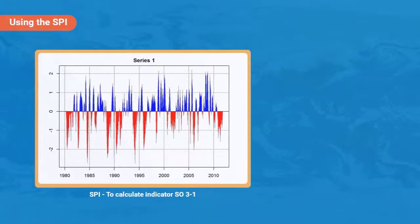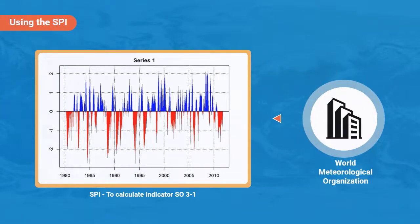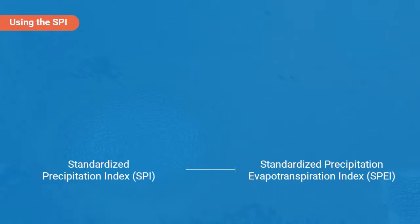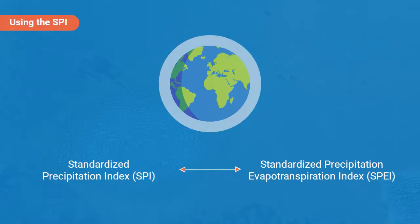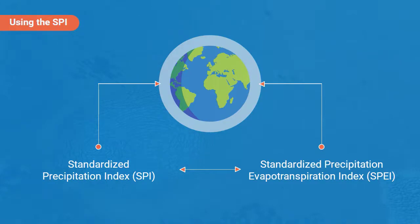The SPI is recommended as the basis for calculating indicator SO3.1, given its endorsement by the World Meteorological Organisation to monitor meteorological drought in the Lincoln Declaration on Drought Indexes. However, parties may use other indices already in use at national level, such as the Standardised Precipitation Evapotranspiration Index (SPEI), which is readily comparable to the SPI and more reliable in arid areas.